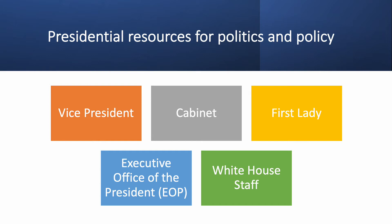The president has other resources besides delegated power that I'm going to briefly discuss. They include the vice president, the cabinet, the first lady, the executive office of the president, and the White House staff. These are things basically under the president's own control — the president's personal resources — as opposed to things delegated by Congress.